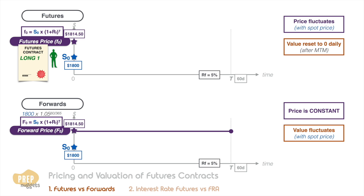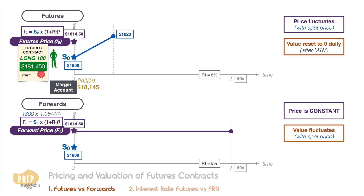For an equivalent 60-day futures contract, the initial price should be the same. A trader decides to long 100 of this futures contract at initiation, so his long position is $181,450. The initial margin requirement is 10%, so the trader must deposit $18,145 into his margin account. Let's say at the end of the trading day the spot price of gold increases to $1,820.